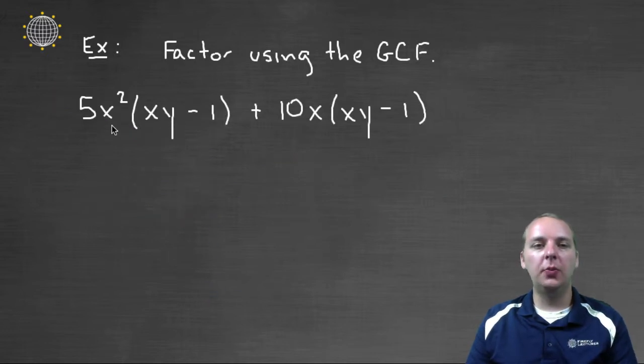And let's do one more. Here we have 5x squared times xy minus 1 plus 10x times xy minus 1.